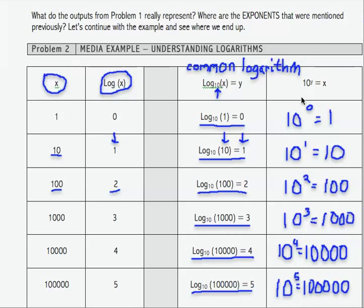But I want you to understand where the exponent thing comes from. So log base 10 of 1 equals 0 is the same thing as saying 10 to the 0 equals 1. Log base 10 of 10 equals 1 is the same thing as saying 10 to the 1 equals 10.